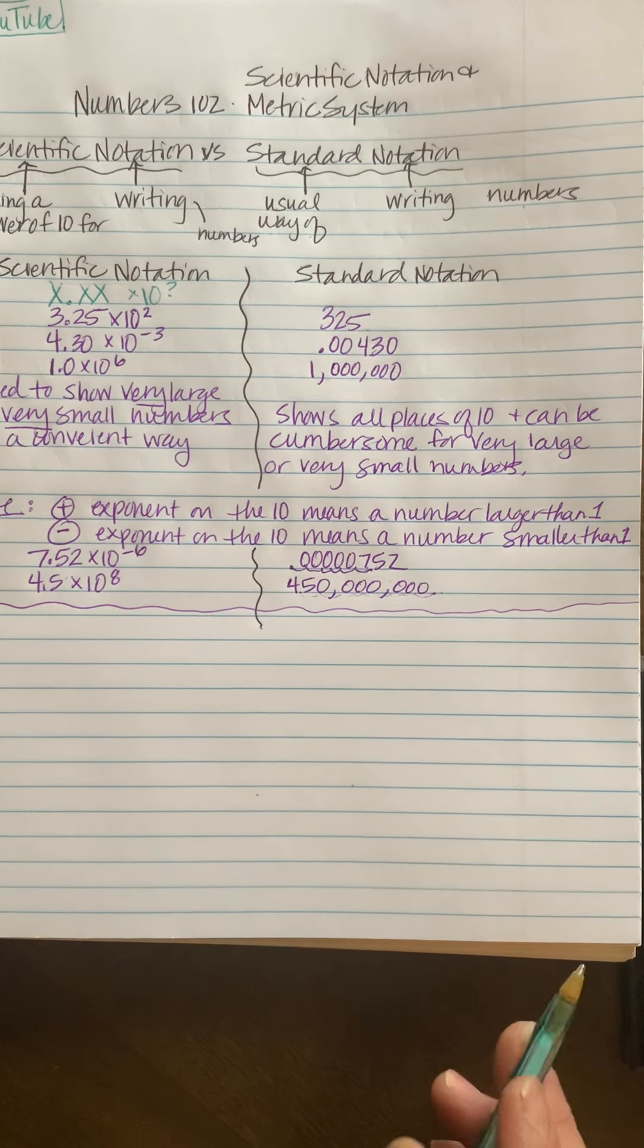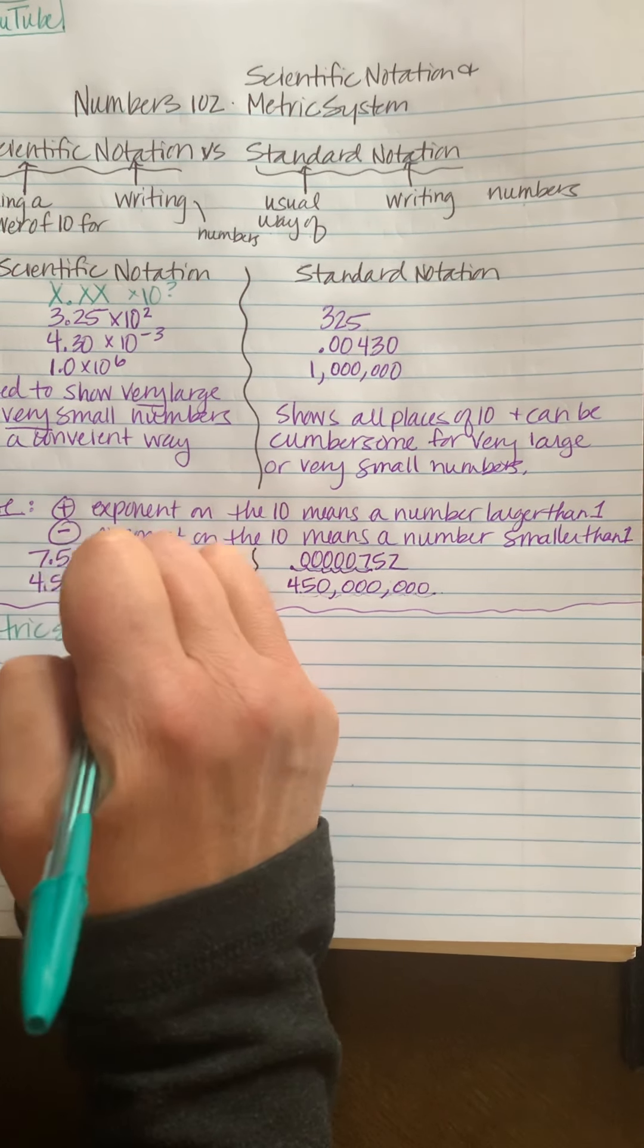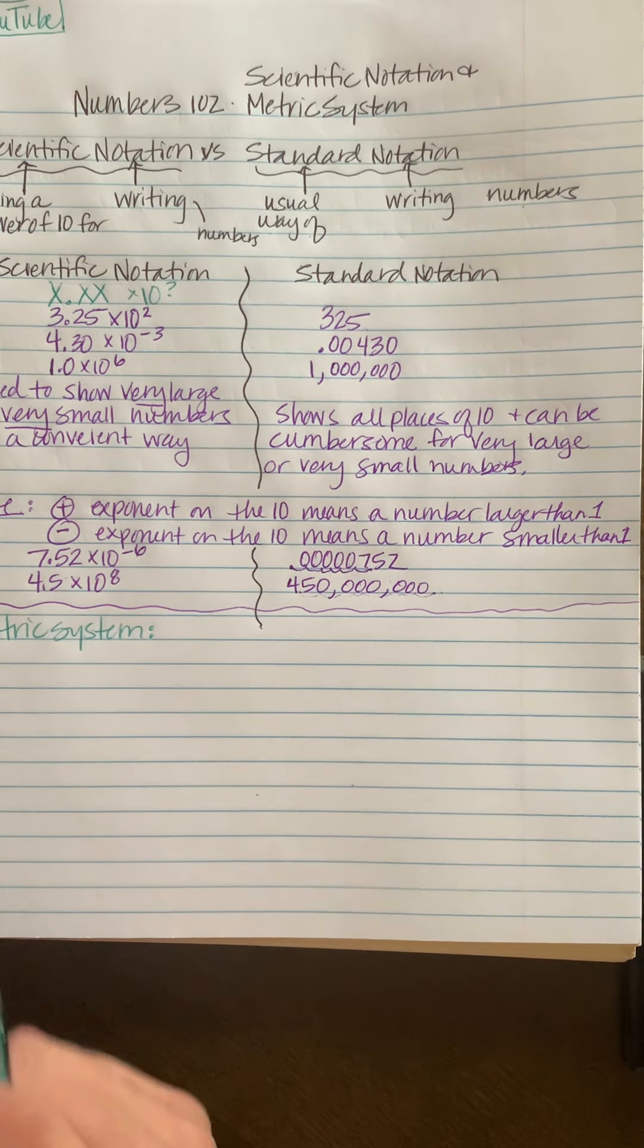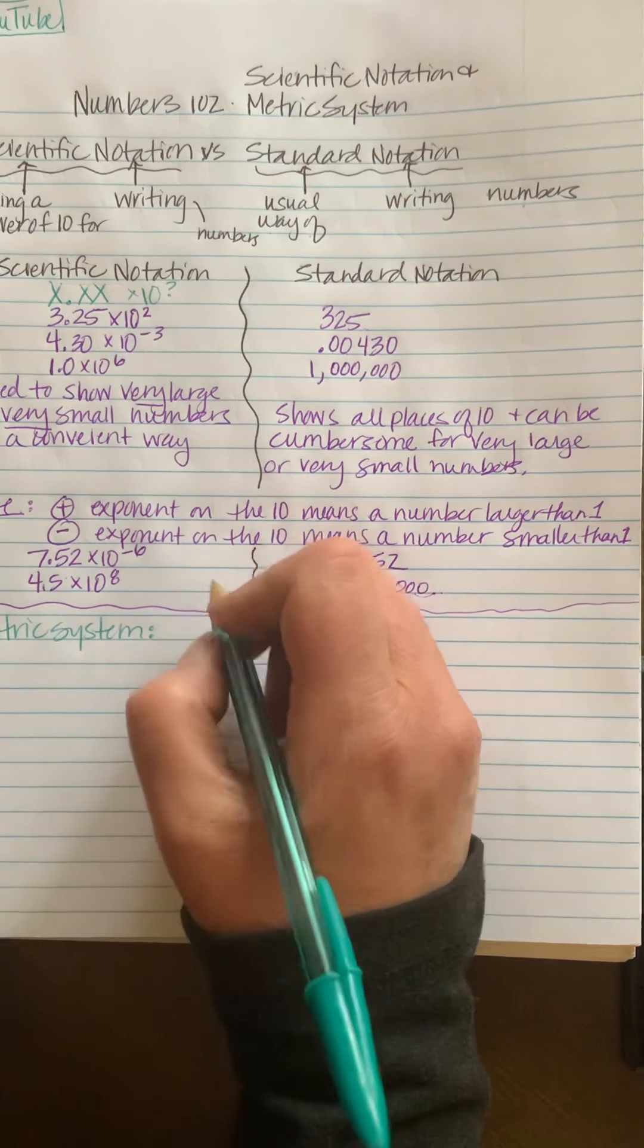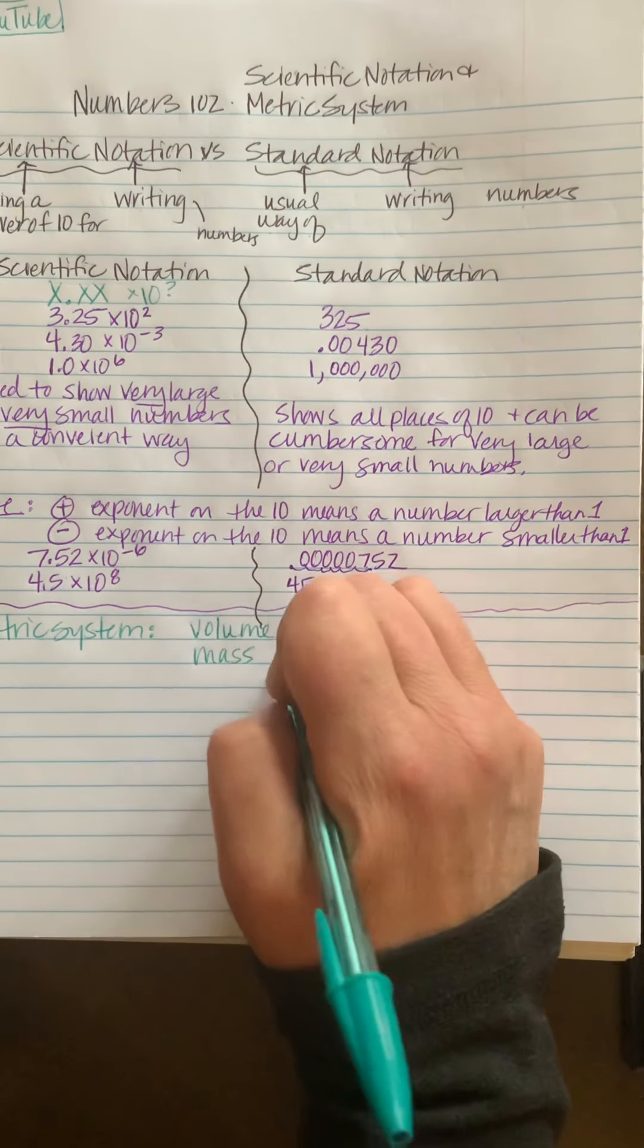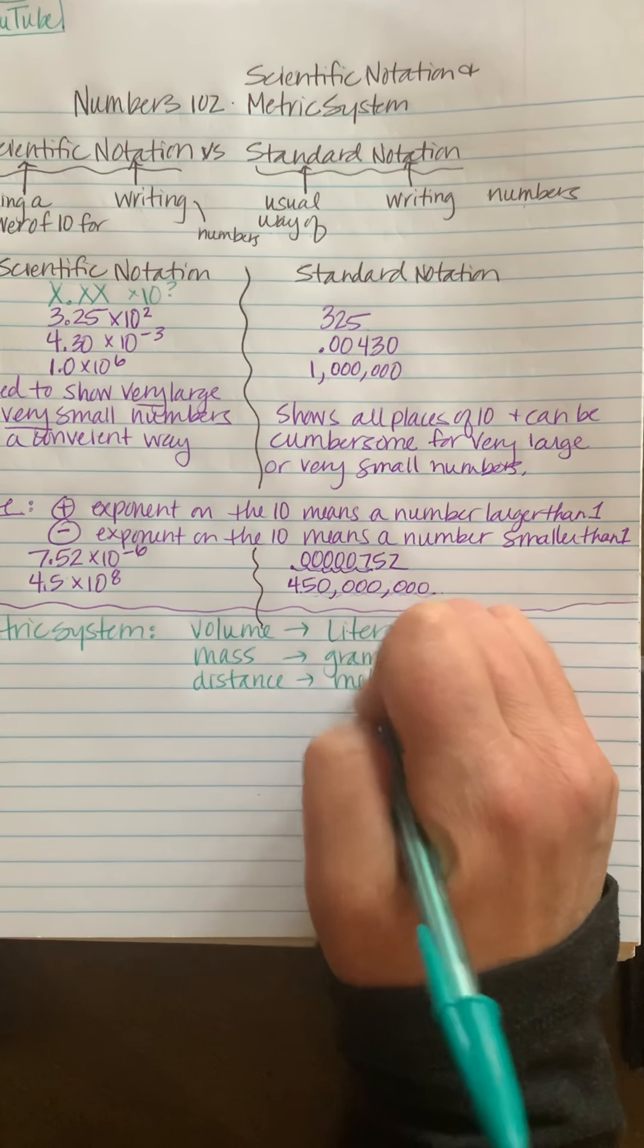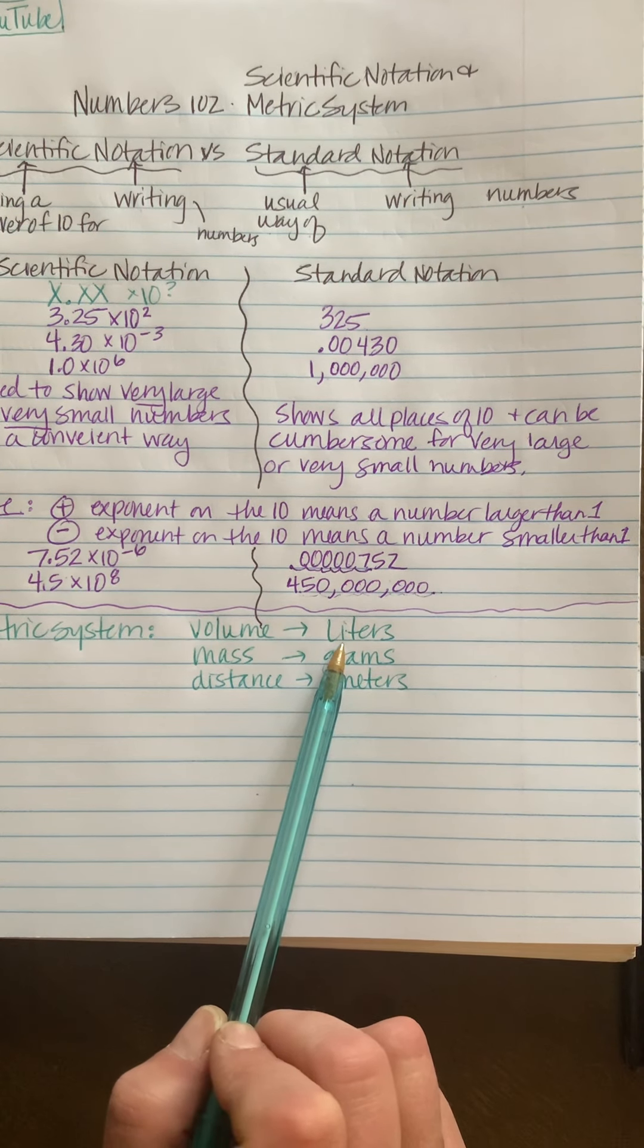And something that is very closely related to scientific notation is the metric system. And when we grew up in the United States, we use the English standard system, which involves like pounds and inches and gallons for different units. And so for the metric system, I'm just going to write down the basic unit for each item. And for volume they use liters, for mass, which would be like weight, is grams, and for distance or length they use meters.